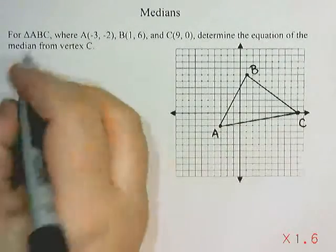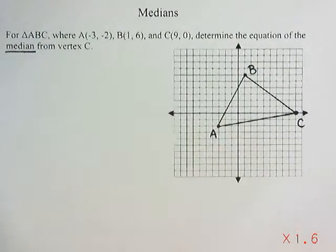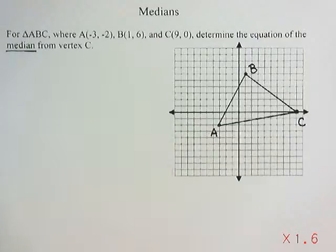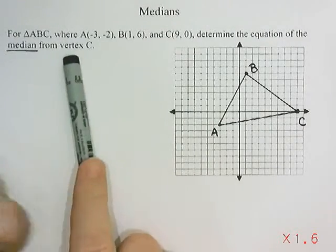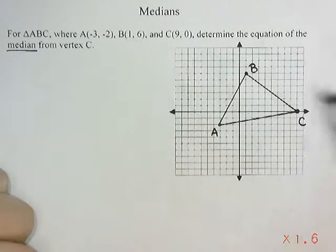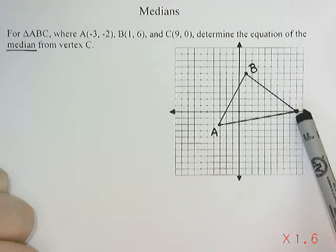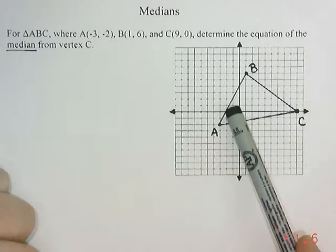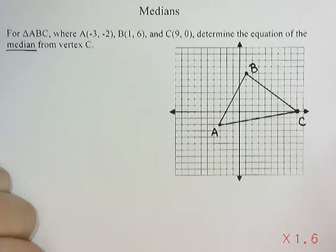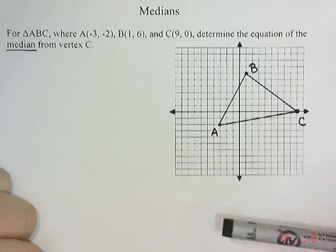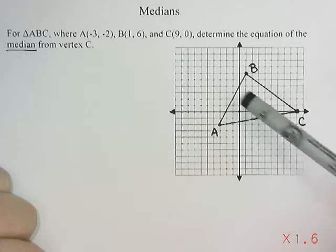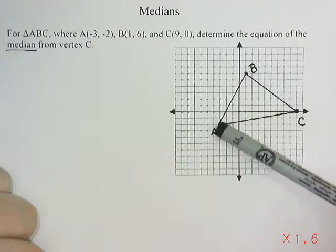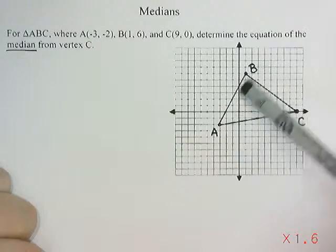So a median is a line that is drawn in a triangle from the corner that it mentions — so a vertex is just a corner — so from vertex C, so from this corner, to the midpoint of the opposite side.